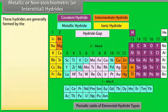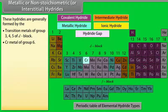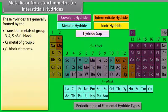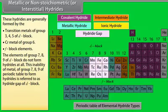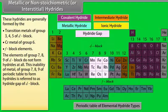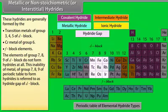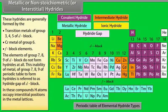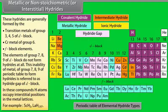Metallic or non-stoichiometric or interstitial hydrides. These hydrides are generally formed by the Transition metal of group 3, 4, 5 of D-block, metals of group 6, and F-block metals. The elements of group 7, 8, 9 of D-block do not form hydrides at all. This inability of metal of group 7, 8, 9 of periodic table to form hydrides is referred to as hydride gap of D-block. In these compounds, H atoms occupy interstitial positions in the metal lattices. For example, ScH2, LaH2.87.